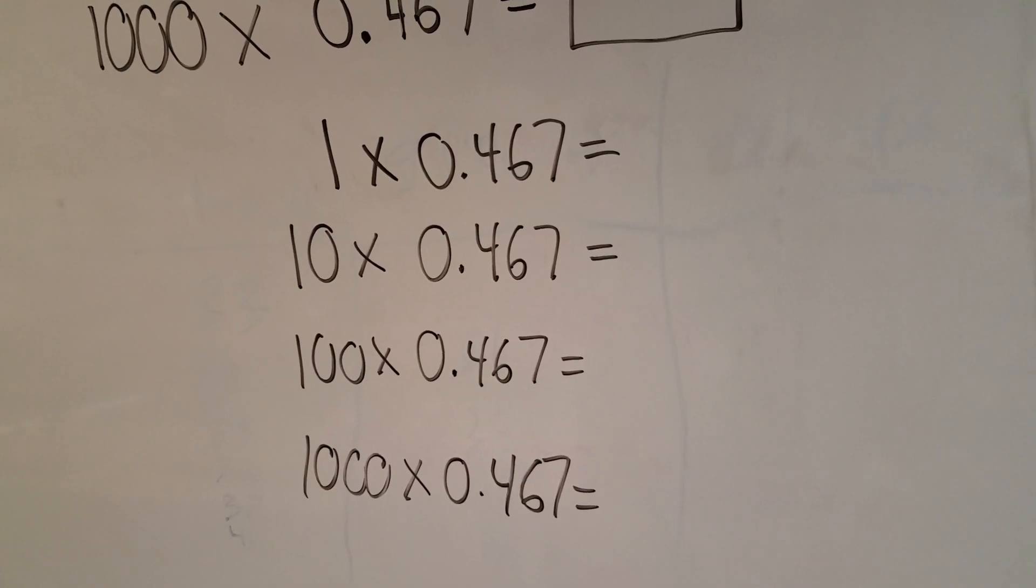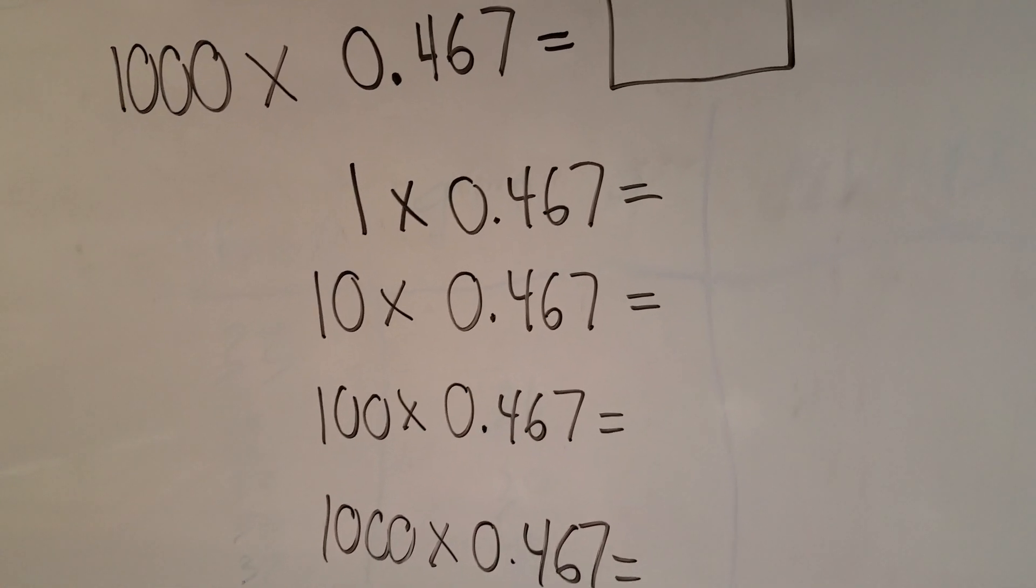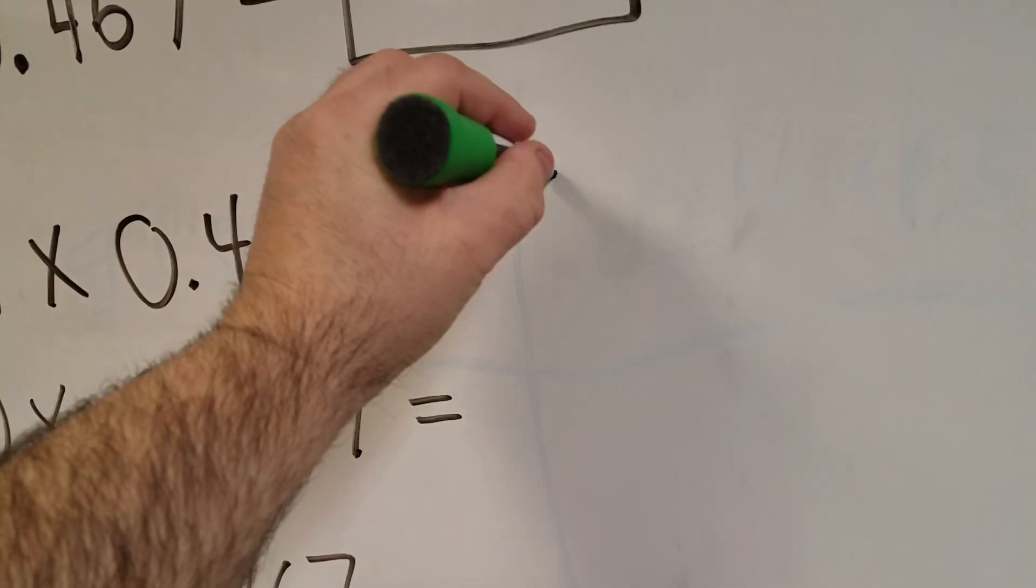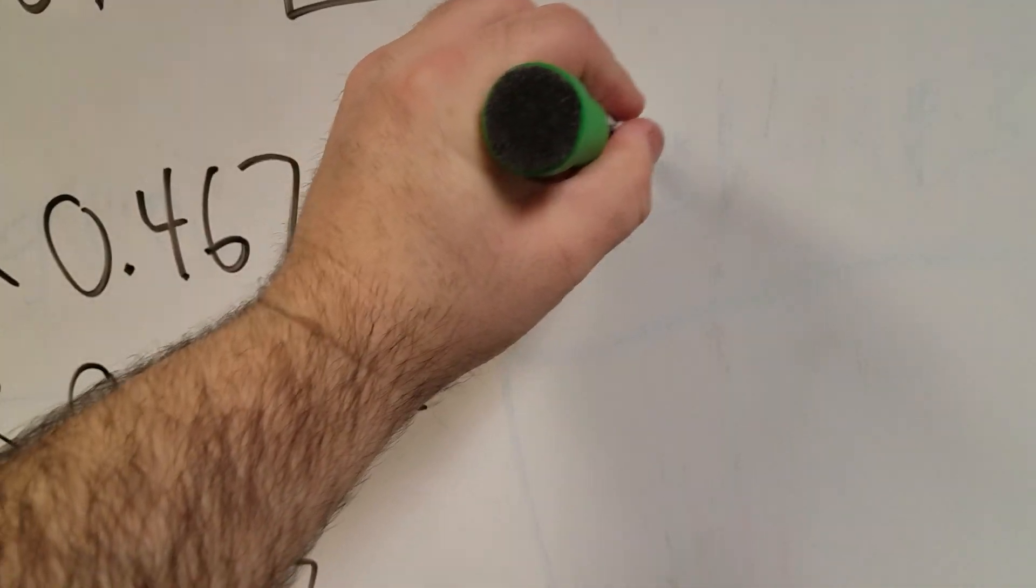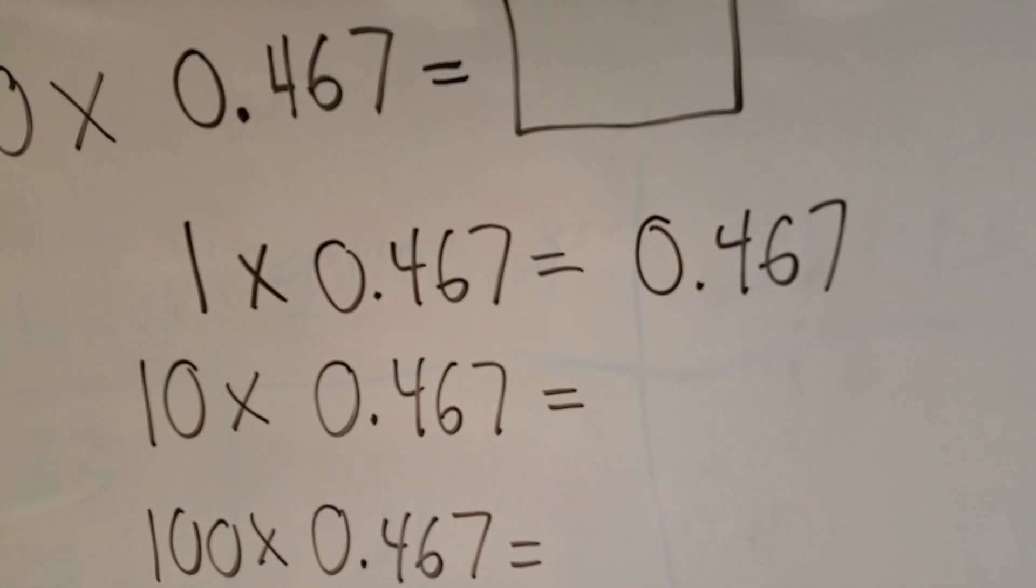All right, so I kind of drew this little chart to show you the progression of what we're working with. So if I take 1 times 467 thousandths, well, that's the identity property, and I'm going to get the exact same answer. Because any number times 1 is that number.